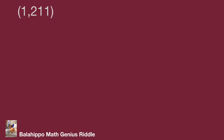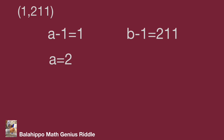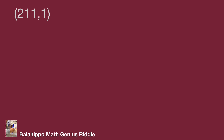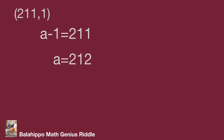When the factor group is (1, 211): a − 1 = 1, so a = 2; b − 1 = 211, so b = 212. When the factor group is (211, 1): a − 1 = 211, so a = 212; b − 1 = 1, so b = 2.